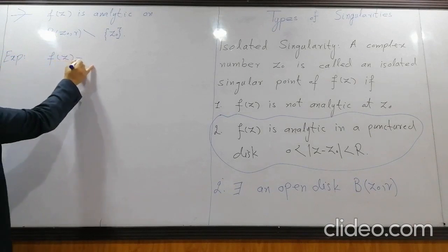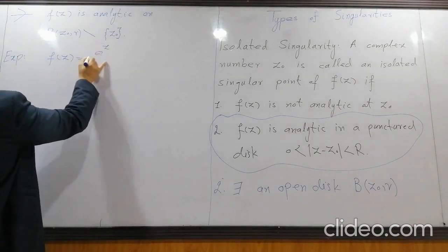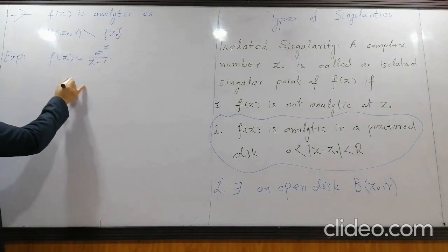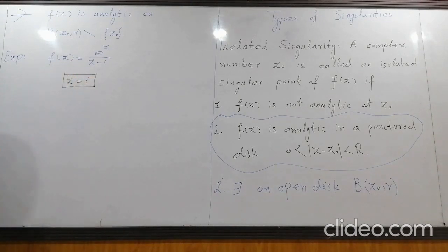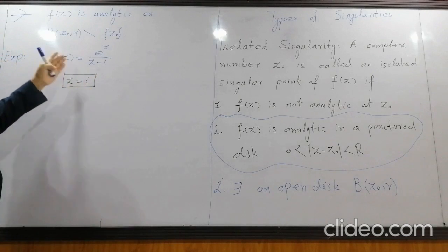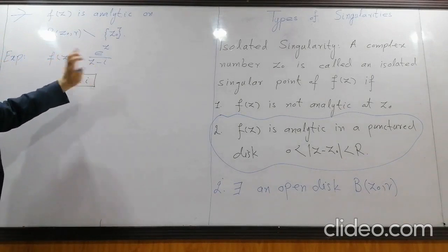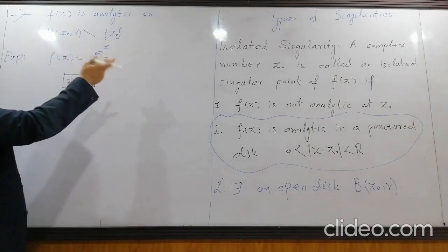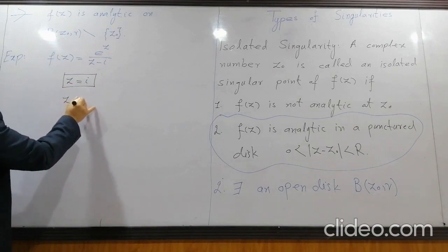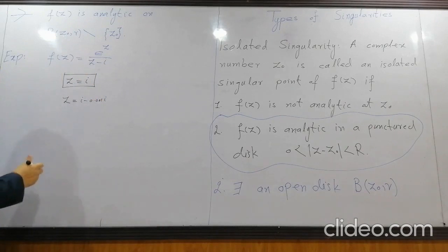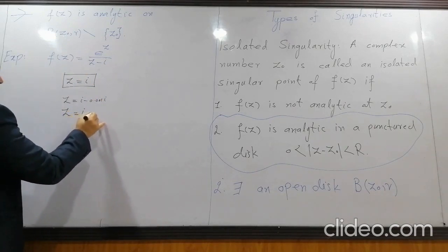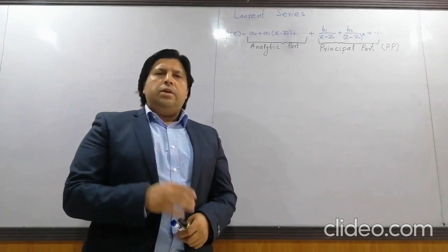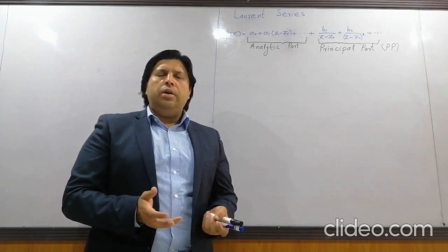Consider the function f(z) = eᶻ / (z − i). This function is not analytic at z = i; if you differentiate and put z = i you will see it is undefined, so it is not analytic at z₀. But if you put any other point near to i, for example z = i − 0.001i or z = i + 0.001i, then it is analytic. Isolated singularity has three types: removable singularity, essential singularity, and poles.